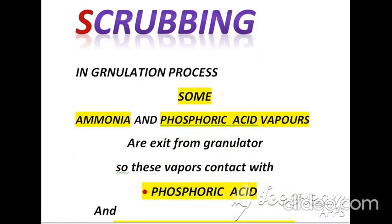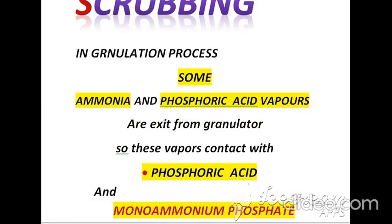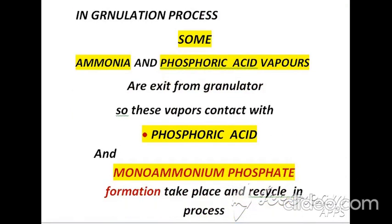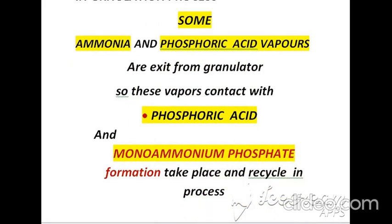During the granulation process, some ammonia and phosphoric acid vapors exit from the granulator. These vapors come into contact with phosphoric acid, mono ammonium phosphate formation takes place, and the material is recycled back into the process.